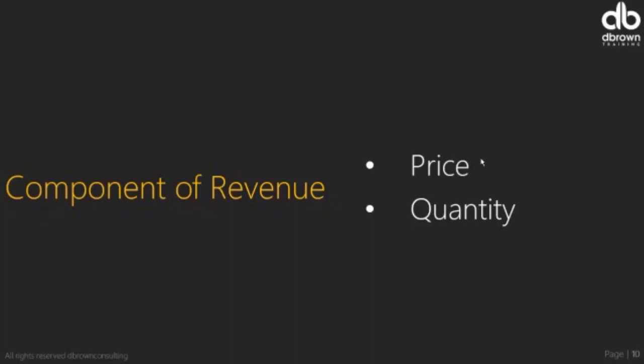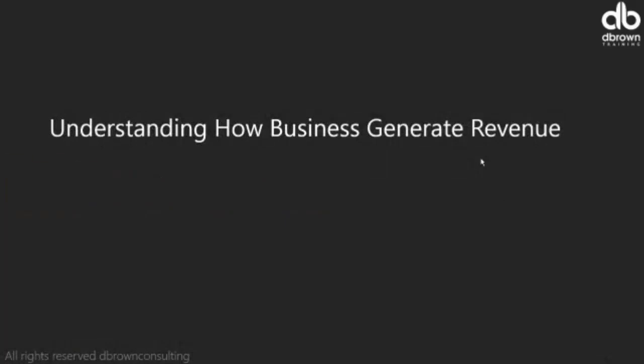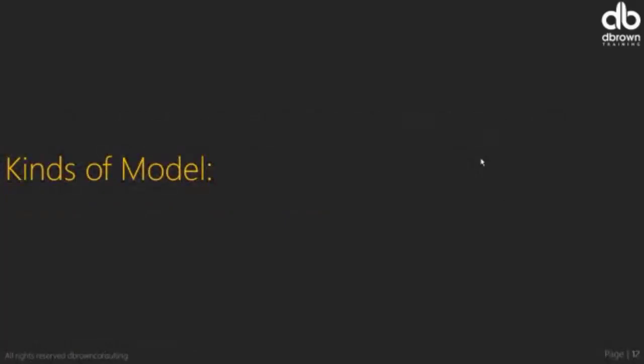In oil and gas: price per barrel multiplied by total production gives you the revenue. For banks, focusing on their core business operations, you look at the total loans given out — that's the quantity — and the yield or interest charged on each respective loan. That gives you their revenue. So as a modeler, the first thing you need to understand is how this business generates revenue.